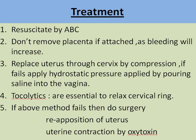Symptoms at that time include shock due to vasovagal stimulation. Treatment involves resuscitation by the ABC protocol. We do not remove the placenta if it is attached, as bleeding will increase. We replace the uterus through the cervix by compression. If this fails, we apply hydrostatic pressure by pouring saline into the vagina, use tocolytics to relax the cervical ring, and if these methods fail, we do a surgical reposition of the uterus followed by uterine contraction using oxytocin.